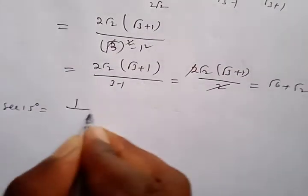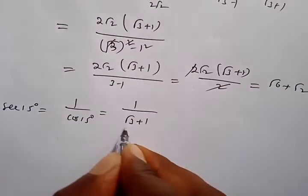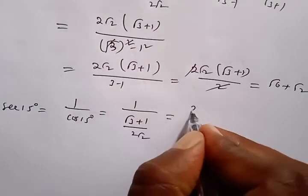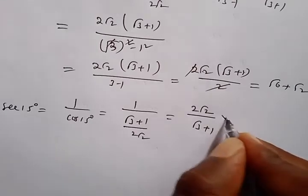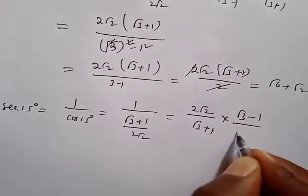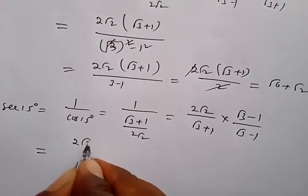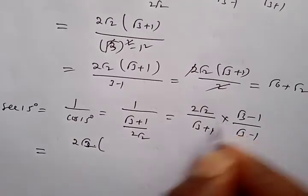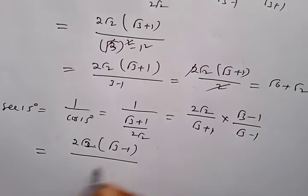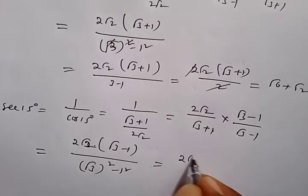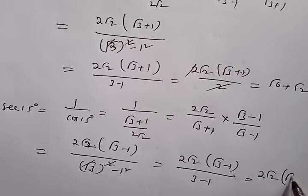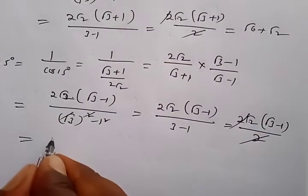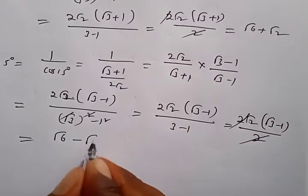For sec 15° = 1/cos15° = 1/[(√3+1)/(2√2)] = 2√2/(√3+1). Rationalizing by multiplying by (√3-1)/(√3-1): numerator = 2√2(√3-1); denominator = 3-1 = 2. So sec 15° = √2(√3-1) = √6 - √2.